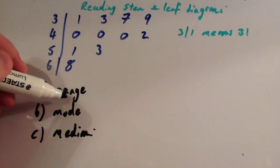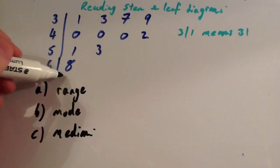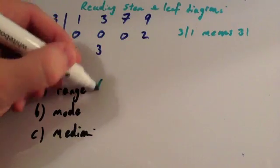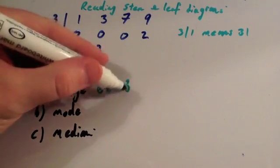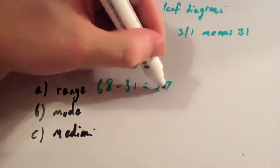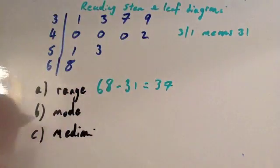Okay, so the range is the biggest number, subtract the smallest number. Well, the biggest number here is 68, the smallest number is 31. So we're going to do 68 subtract 31. When you subtract that, you'll get 37 as your answer. So the range is 37.